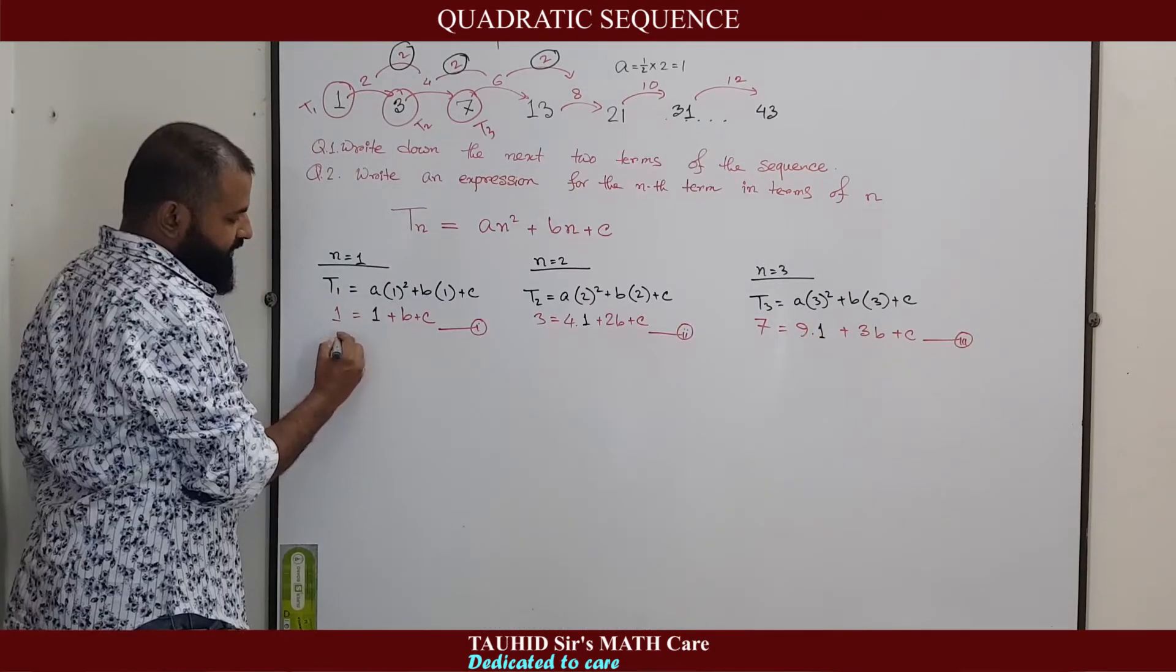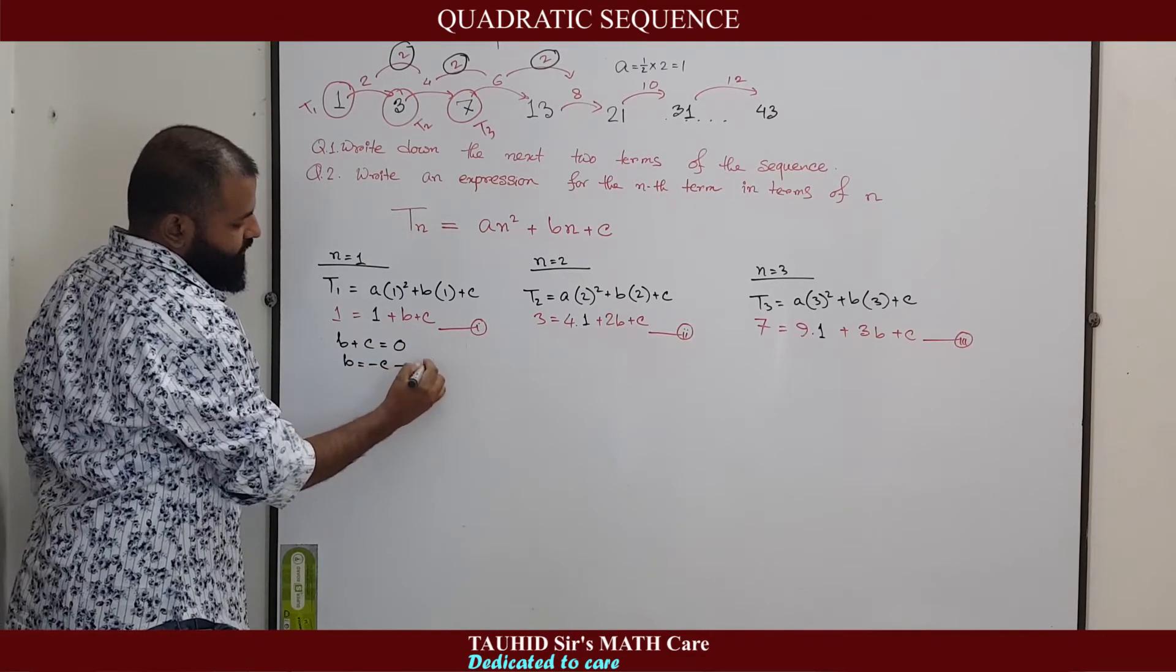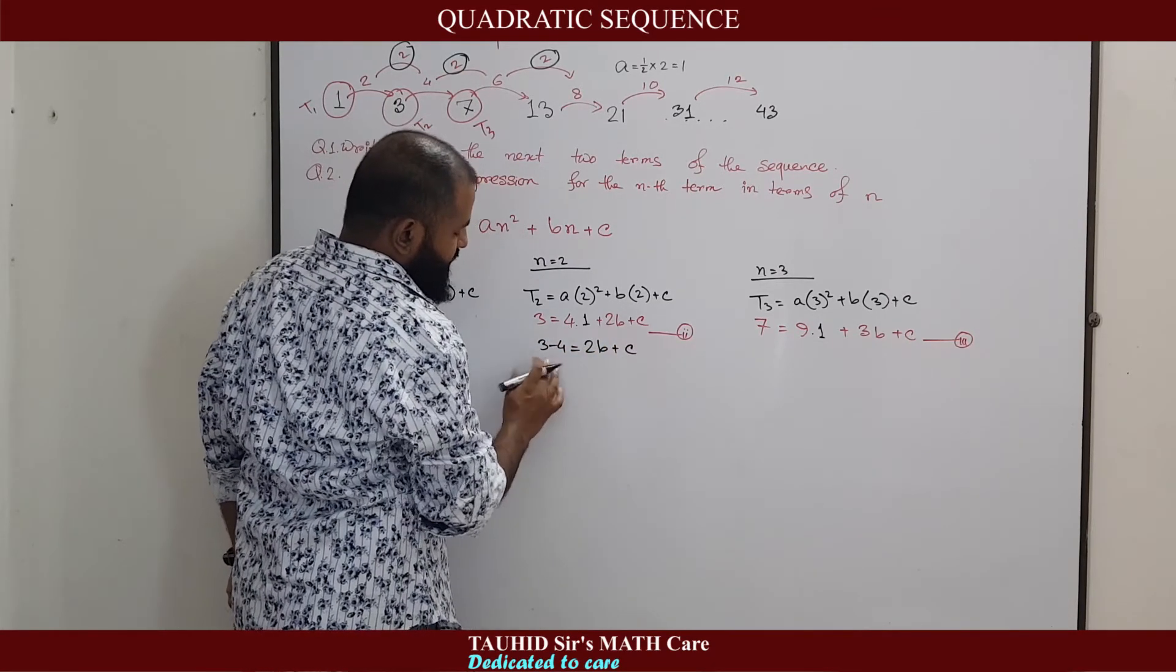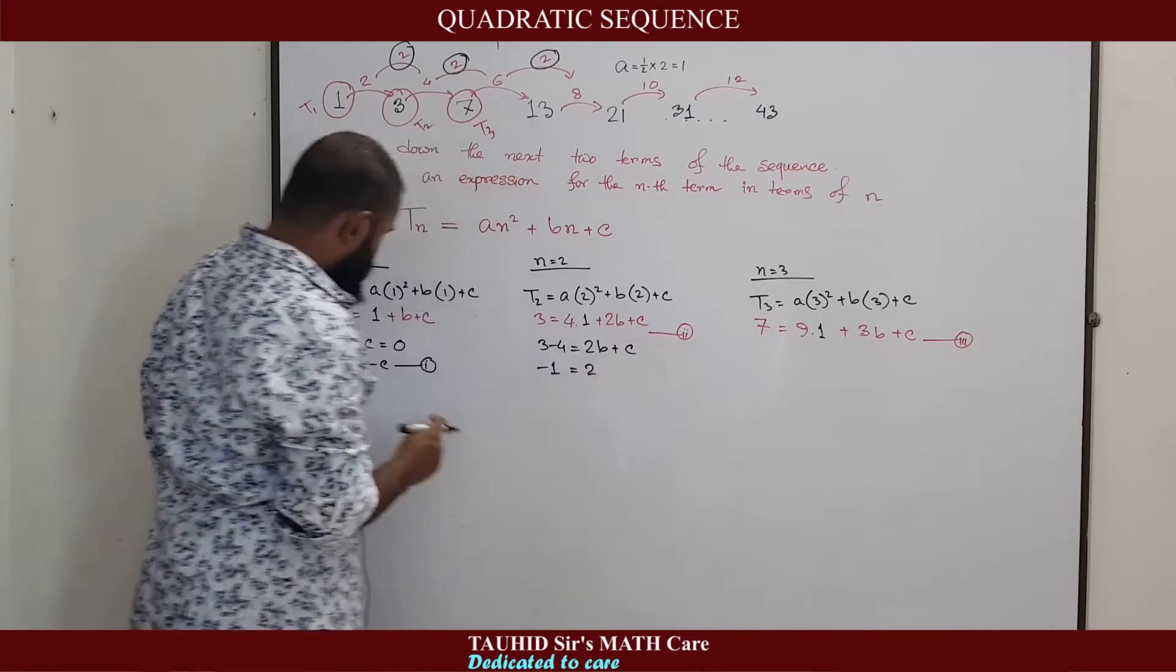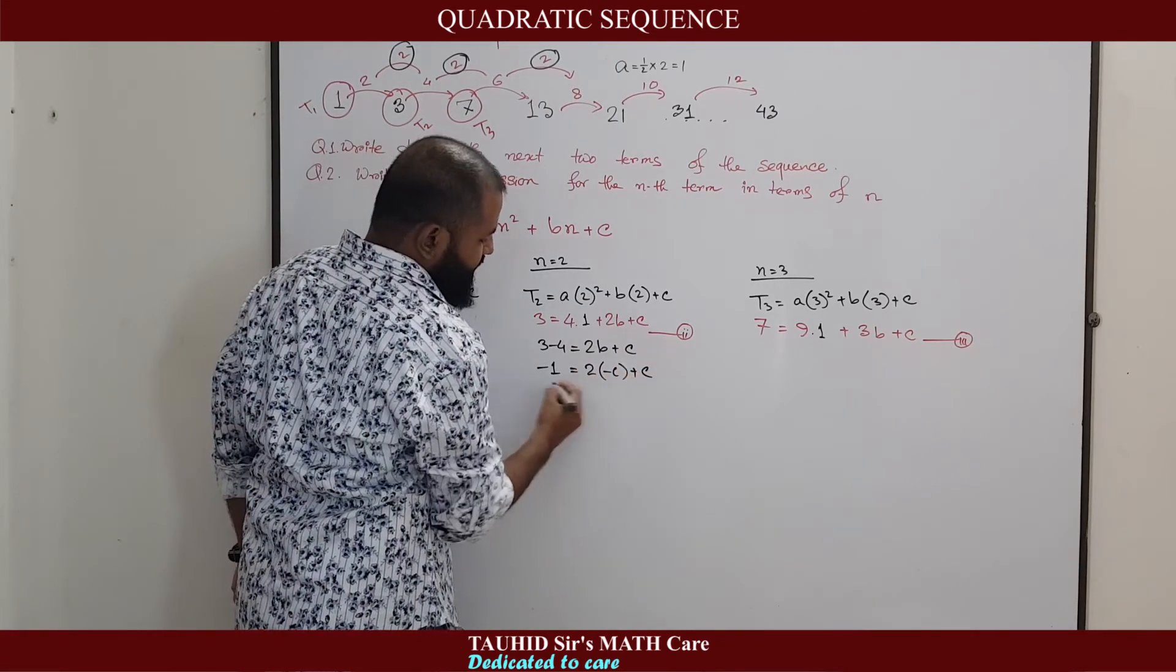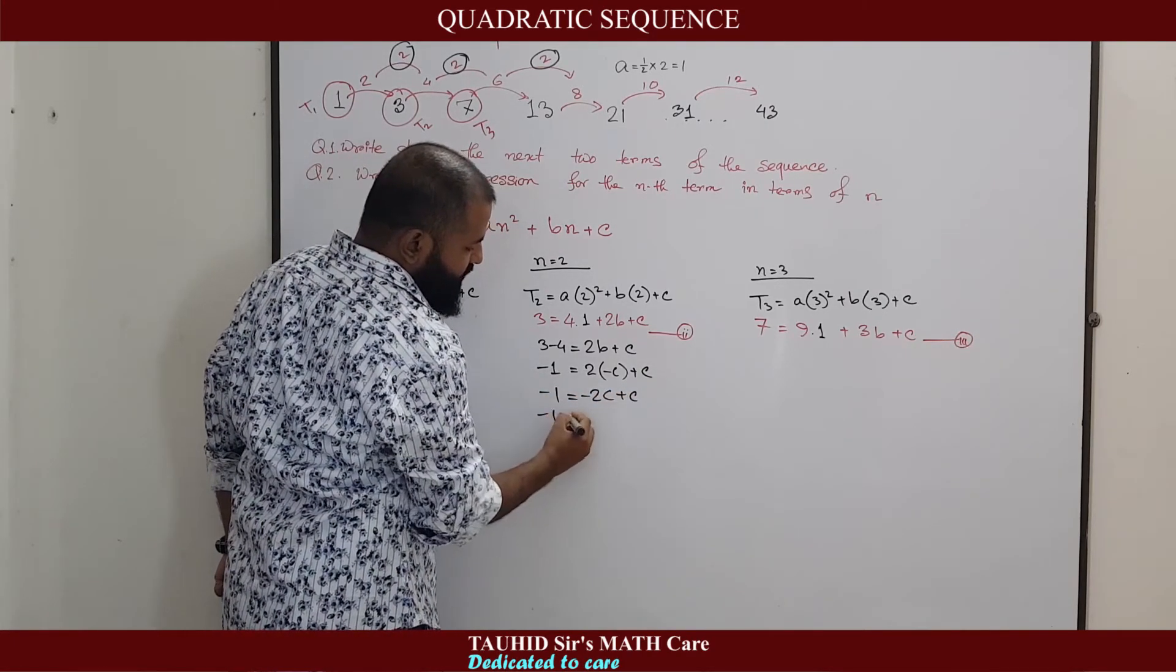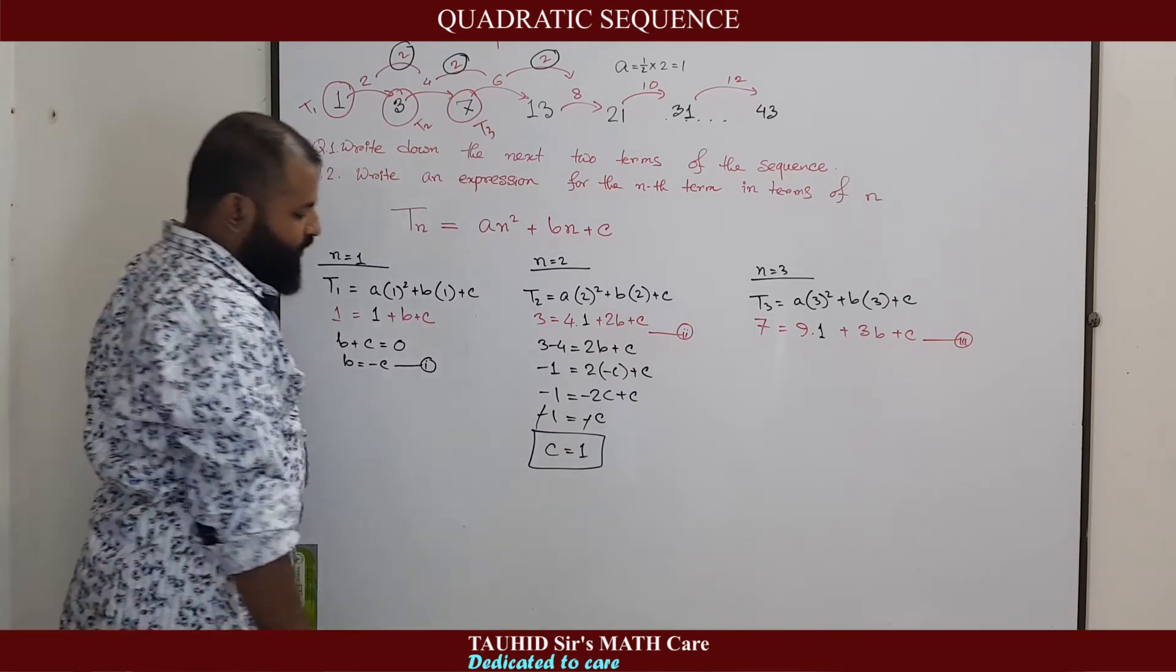So, we see here that B plus C equal to 0, that means B equal to minus C. Here we get 3 minus 4 equal to 2B plus C. That means it becomes minus 1 equal to 2. In place of B, we can put minus C plus C. As we saw here that B equal to minus C. That means minus 1 equal to minus C. That means C equals to 1. We got the value C equals to 1.